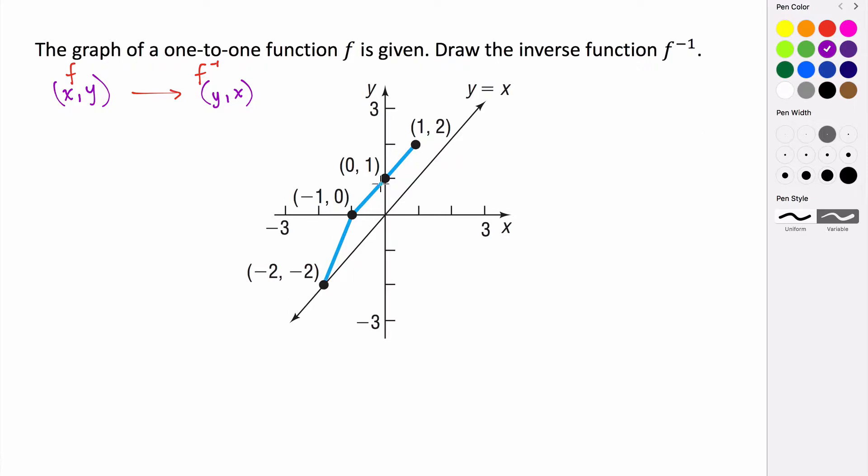If we're given these ordered pairs, I can actually just take the x and y coordinates and swap them, and then those values should be points on the inverse of this function. So I have (-2, -2). If I switch the x and y coordinates, I have (-2, -2), so this point is a point on the inverse as well.